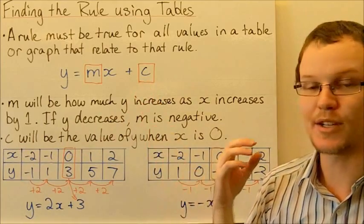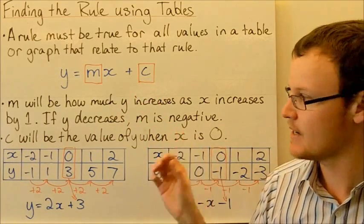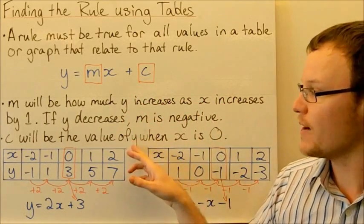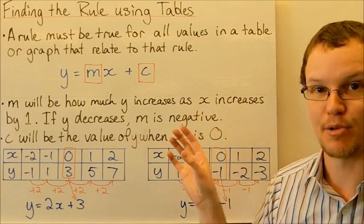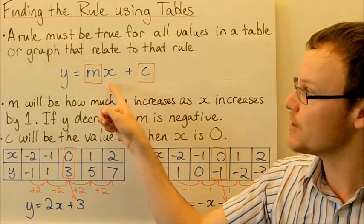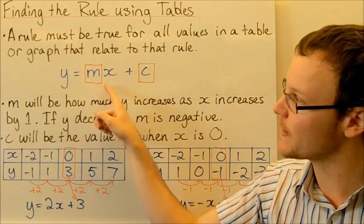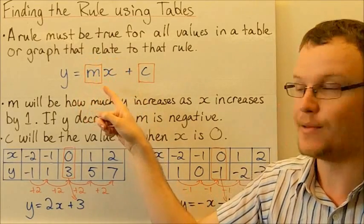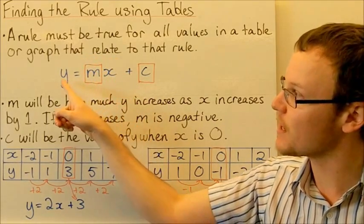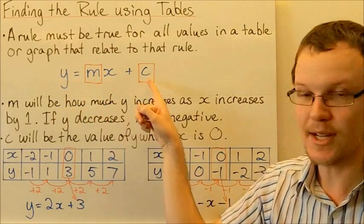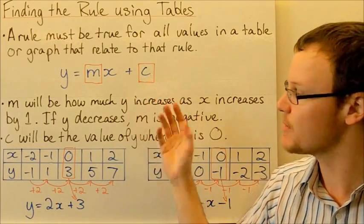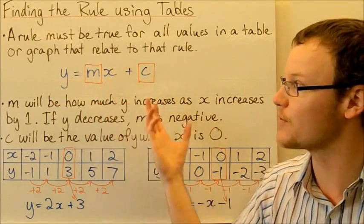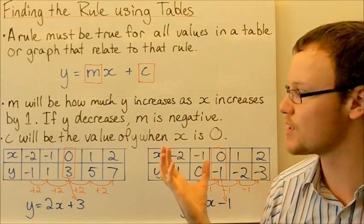c, when we're looking to find c, c is the value of y when x is equal to 0. So if x is equal to 0 in the form y = mx + c, this whole mx term equals 0, so we'd just be left with y equals c.